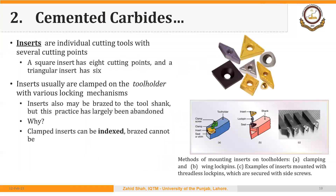Carbide tools are generally available as inserts — individual cutting tools with several cutting points. A square insert has eight cutting points: four on one side and four on the other. A triangular insert has six cutting points. Inserts are usually clamped on the tool holder with various locking mechanisms. Inserts can be brazed to the tool shank, but this practice has largely been abandoned because brazing is a permanent joint, and after the insert wears out you must discard the whole cutting tool including the shank.